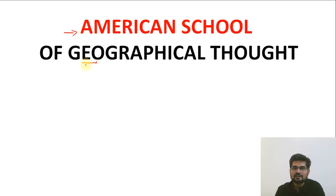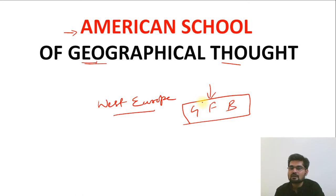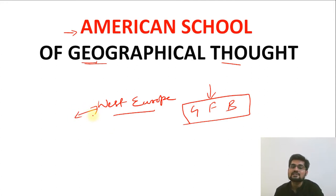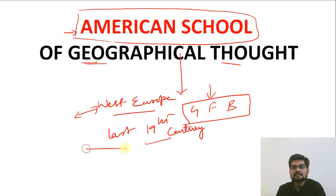When we look at the American School of Geographical Thought, let's understand that the entirety of Western Europe — largely Germany, France, and Britain — were contemporaries in terms of the establishment of geographical thought. The American School was also not far behind, as Western Europe and Americans were connected through various trades, commerce, and exchange of knowledge. The American School of Thought also emerged at the same time — the last part of the 19th century.